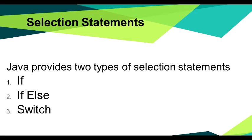Let us deal with selection statements. The selection statements allow you to choose the set of instructions to execute depending upon expressions. Java provides three types of selection statements: if, if-else, and switch. In addition, in certain circumstances, the question mark operator can be used as an alternative to the if statement. The selection statements are also called conditional statements or decision statements.